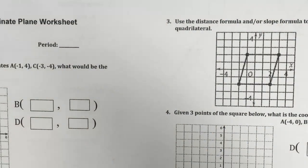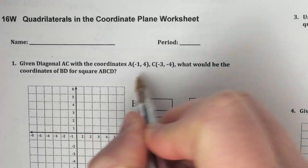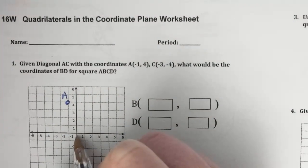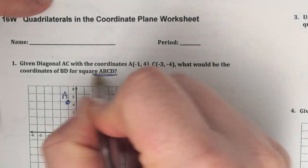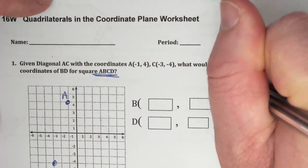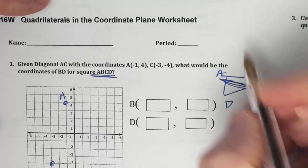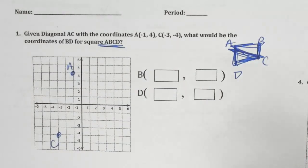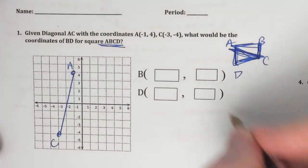Moving on to page 16. First thing you want to do is graph it. We have A at negative 1, positive 4, and C at negative 3, negative 4. We have a square where the vertices are A, B, C, D. A and C are diagonals to each other. So we need to find the midpoint of diagonal AC.